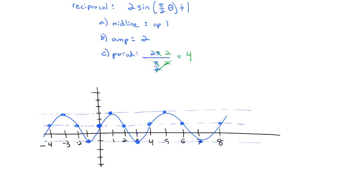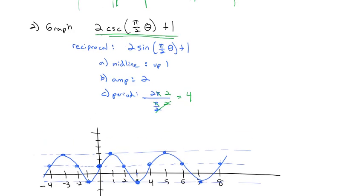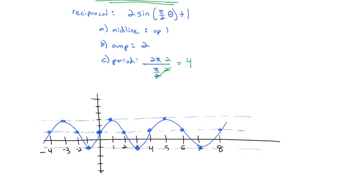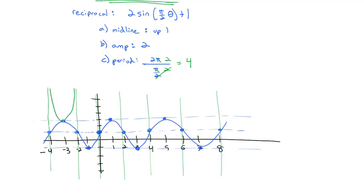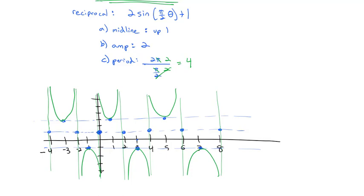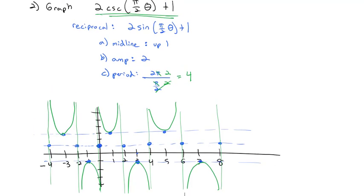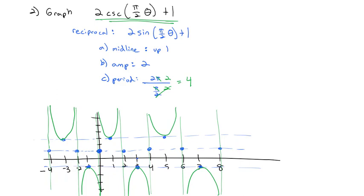Since we're graphing cosecant, not sine, the reciprocal creates vertical asymptotes wherever the graph hits the midline. Wherever the sine graph hits the midline, we add a vertical asymptote, and the cosecant curves come off those. Erasing the sine graph, what's left is the graph of 2 cosecant(π/2·θ) + 1.